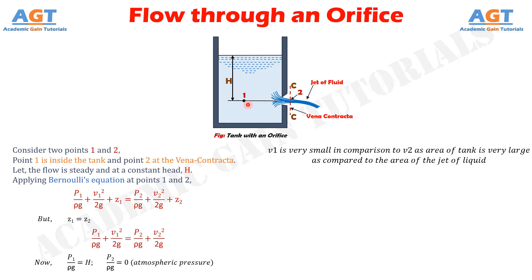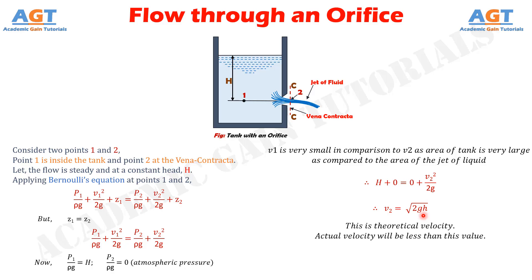Putting the values in this equation we get: H plus zero equals zero plus v2 squared divided by 2g. Solving this equation we finally have velocity v2 equals root over 2gH. This is the theoretical velocity; actual velocity will be less than this value.